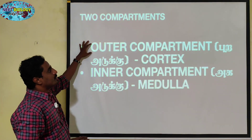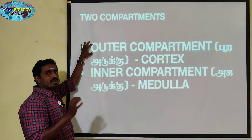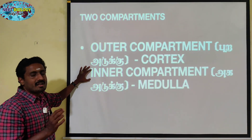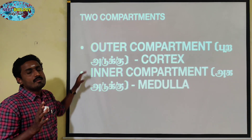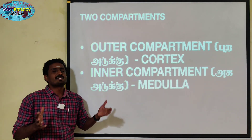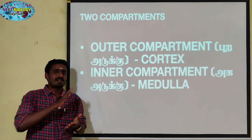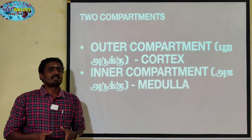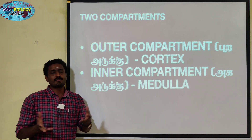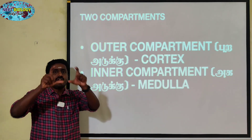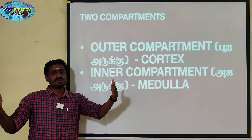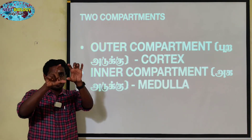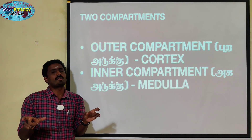In the lobules, there are parts of the total thymus. First, the outer compartment is called the cortex. Then the inner compartment is called the medulla. In biology — for the cross section of the plant or animal — the outer layer is the cortex.